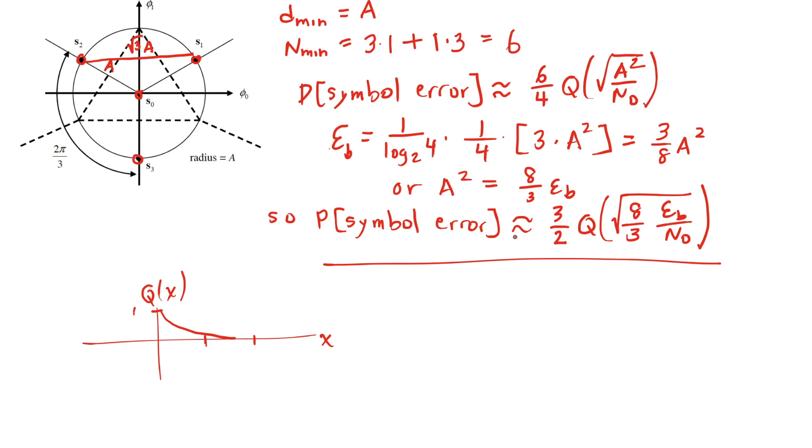And so yeah, as an approximation, usually it's reasonable to use the nearest neighbor approximation to come up with a quick expression for the probability of error.